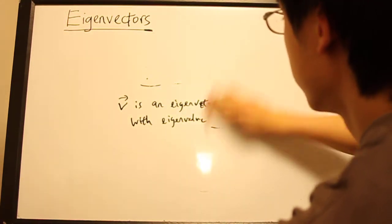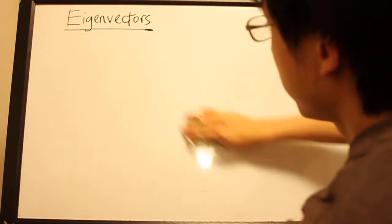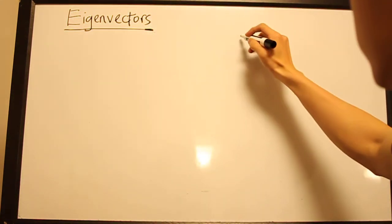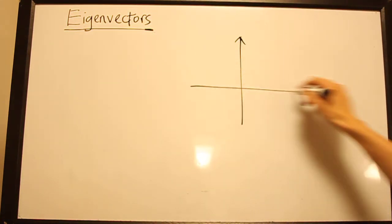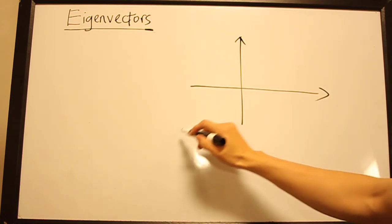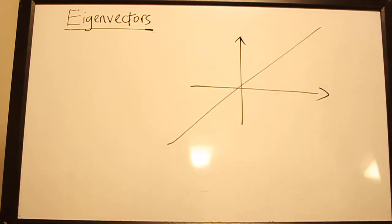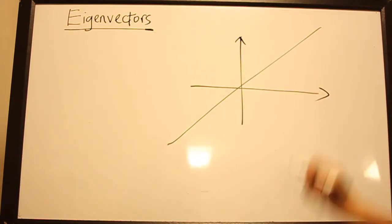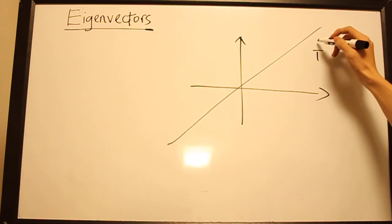So let's do an example of what eigenvector looks like for a particular example of a linear transformation. So let's say we have a line in R² and you'll recall that a reflection across this line is a linear transformation. So let's let T be the reflection across this line.